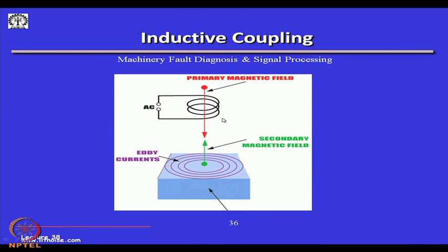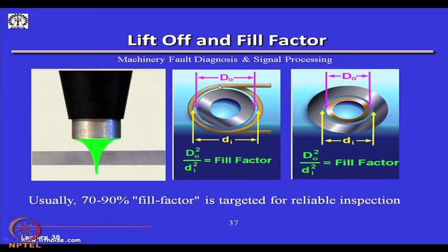There is inductive coupling between the primary coil and the secondary magnetic field because of the eddy current — this coupling is what we sense and use. There is another parameter to be careful about: how close should the probe be brought to the surface — defined as the lift-off and fill factor. The fill factor is D_outer squared divided by D_inner squared, and usually 70 to 90 percent fill factor is required for reliable inspection.